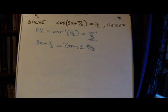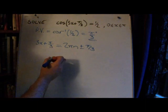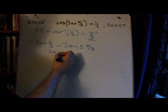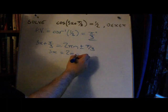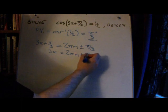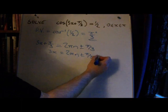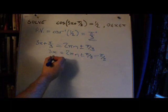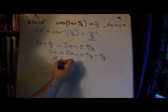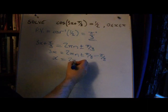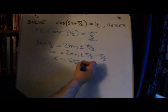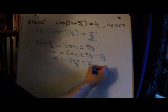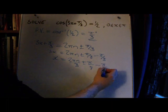As before, we've got to rearrange this to make x the subject. So we'll take the π over 3 to the other side. So that gives us 3x is 2πn plus or minus π over 3, and we've got to subtract π over 3. And then finally make x the subject. So x is 2πn over 3 plus or minus π over 9 minus π over 9.